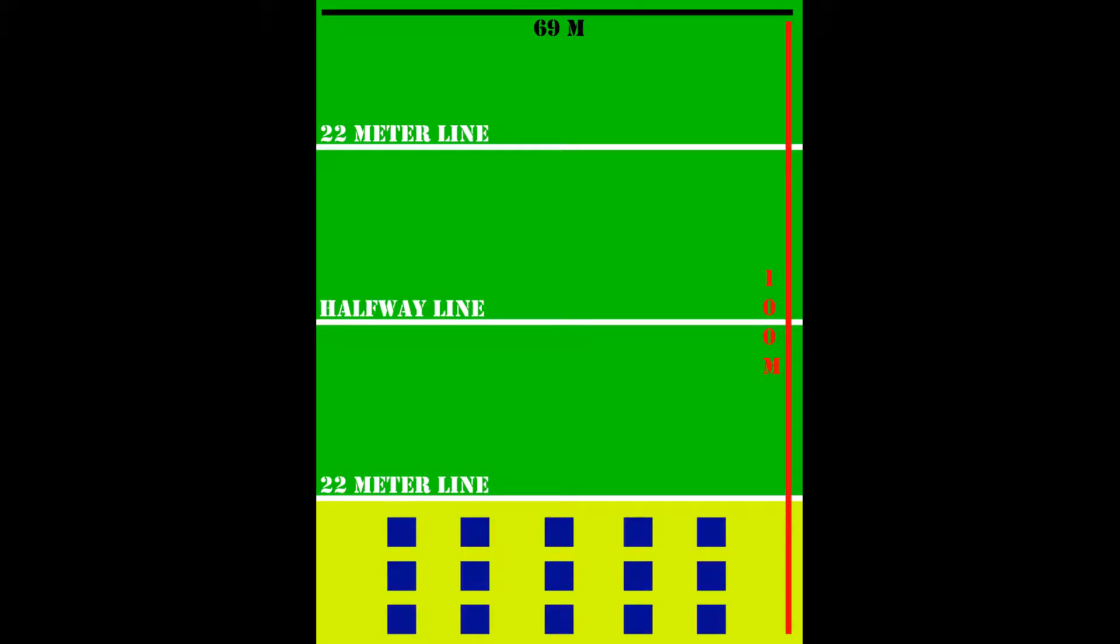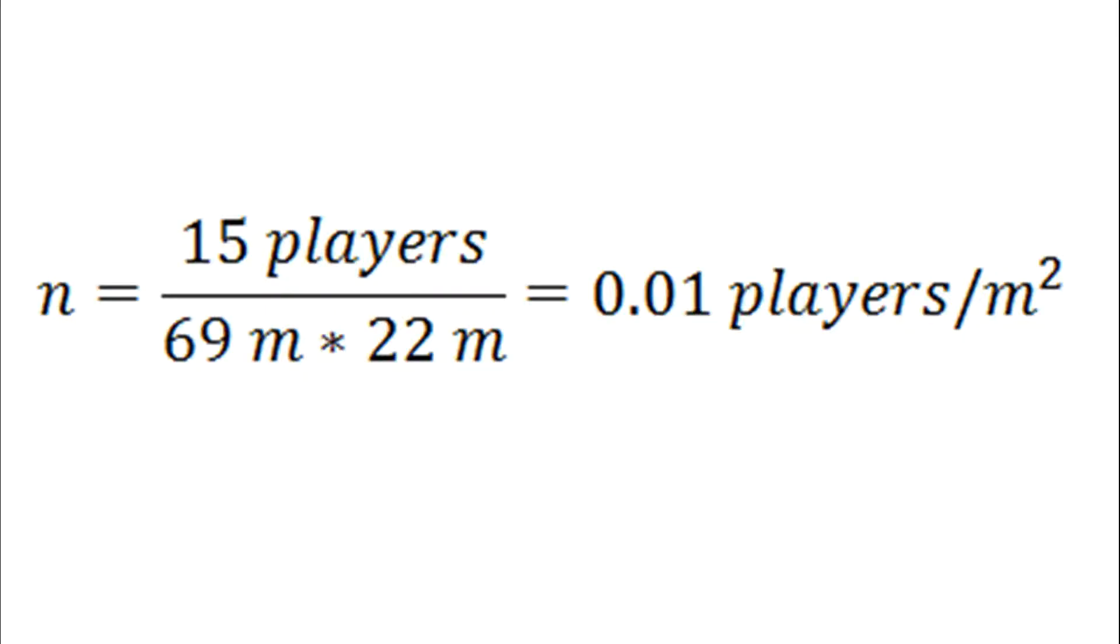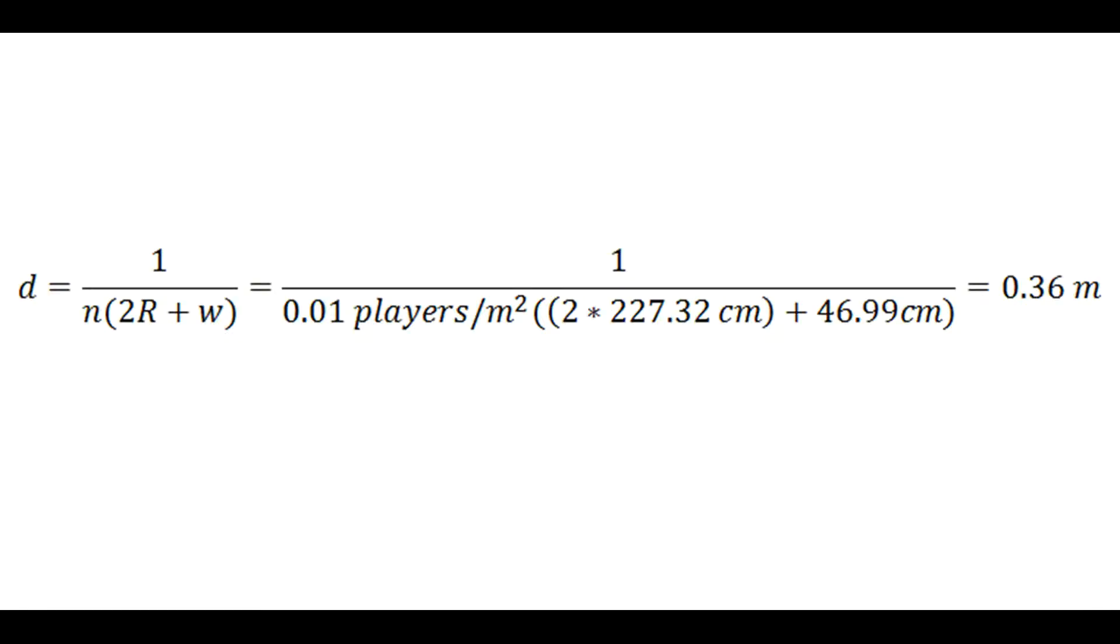However, if all 15 opposing players are between the end line and the 22 meter line, we now have a value of 0.1 defenders per square meter. Therefore, Taylor can only travel an average of 0.36 meters before being tackled.